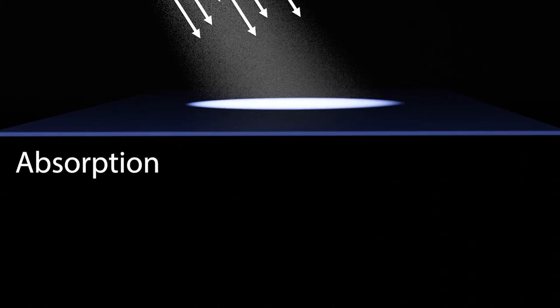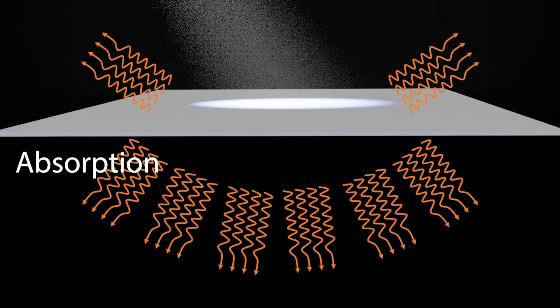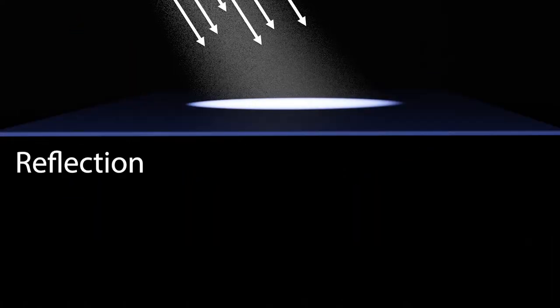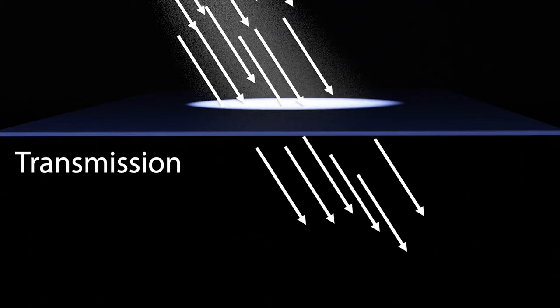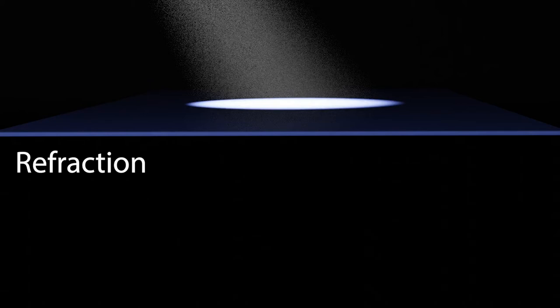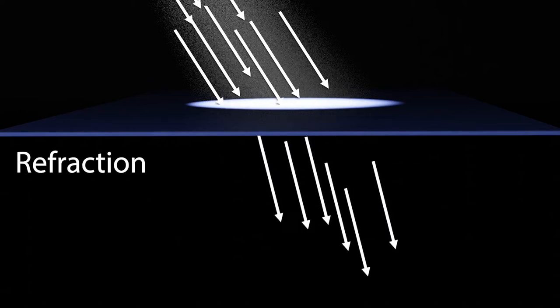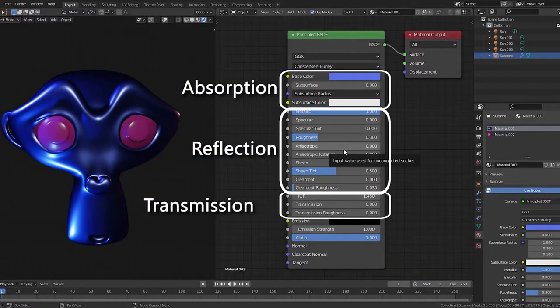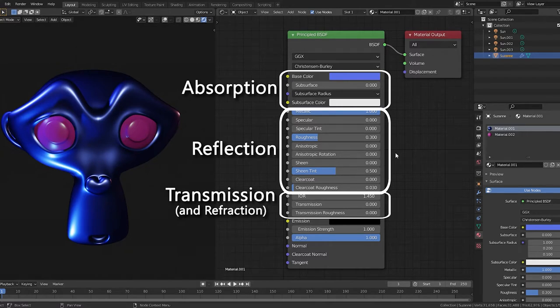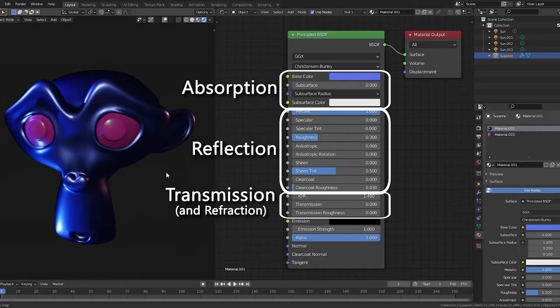When light hits the surface of a material it will behave in one of three primary ways. Absorption occurs when a material converts light energy into a different form, often heat. Reflection occurs when light bounces off the material. Transmission occurs when light passes through the material. Refraction, a type of transmission, occurs when light passes through the material and bends. Absorption, reflection, transmission, and refraction are the primary behaviors of light when it interacts with matter, so it makes sense that these are represented in the Principled Shader.